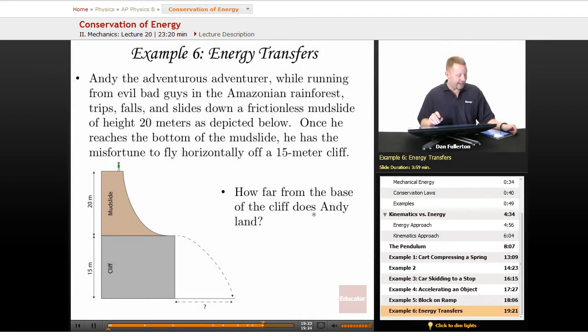A fun example. Andy the Adventurous Adventurer, while running from evil bad guys in an Amazonian rainforest, trips, falls, and slides down a frictionless mudslide of height 20 meters as depicted here. Once he reaches the bottom of the mudslide, he has the misfortune to fly horizontally off of a 15-meter cliff.